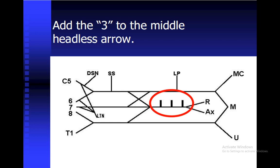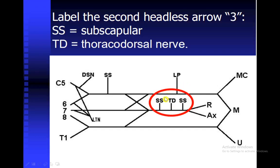Next, another three to add here. Label them as SS for subscapular — remember to differentiate: the SS above is suprascapular, while this one below is subscapular. You can say proximal and distal subscapular, or upper and lower. In the middle, this one is the thoracodorsal nerve.